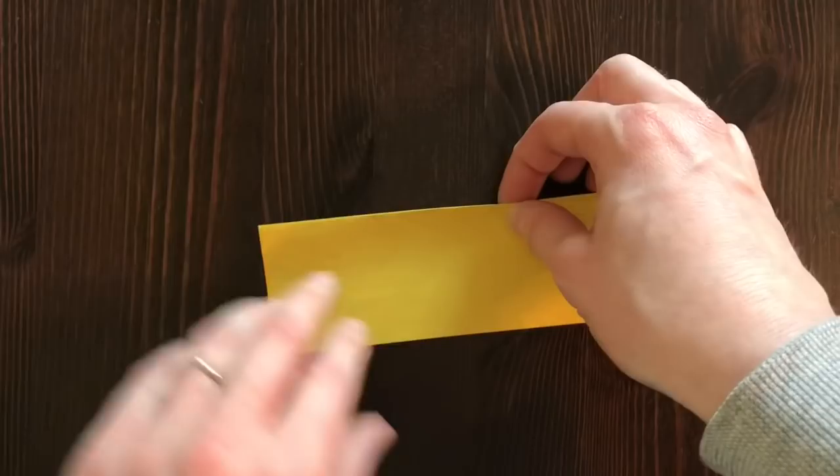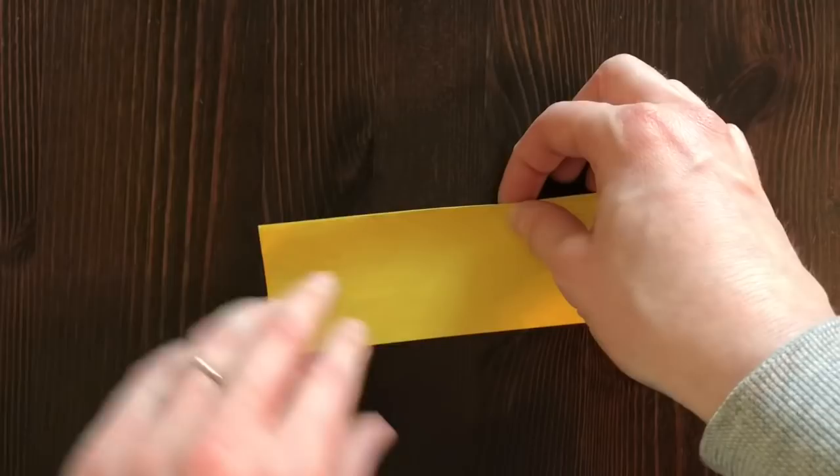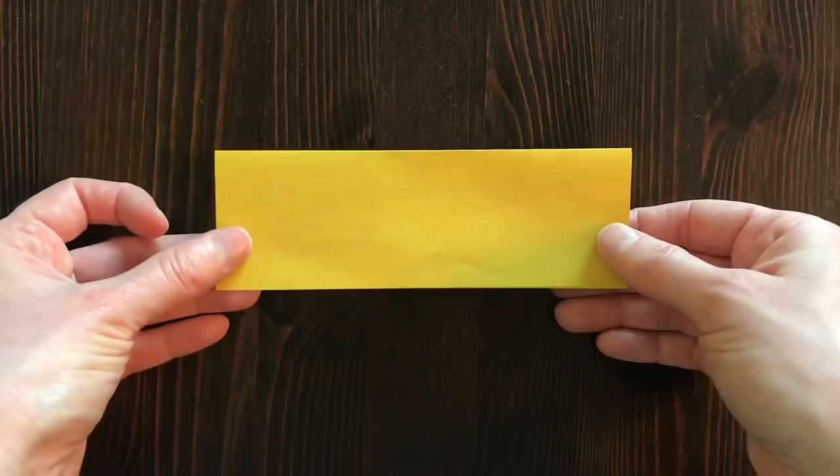And just try to line it up as precisely as I can get. But it doesn't have to be perfect. This is going to be a toy. It's meant to be used, it's meant to be thrown around and wrinkled up. So it doesn't need to be perfect. So now I've got one sheet into thirds.